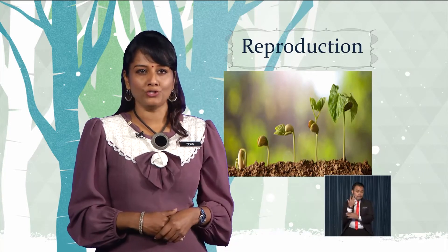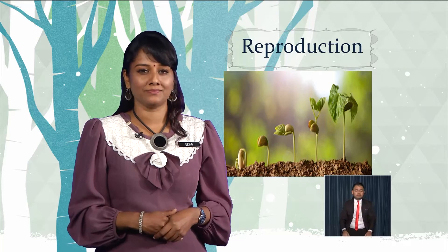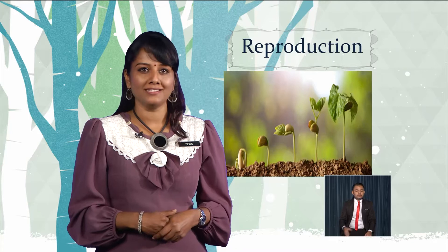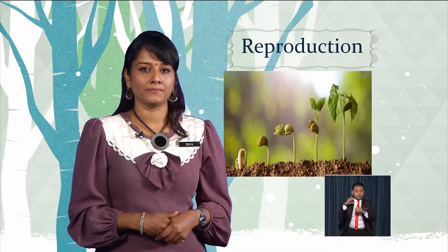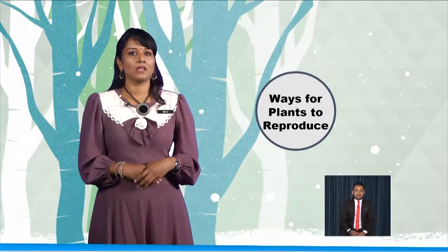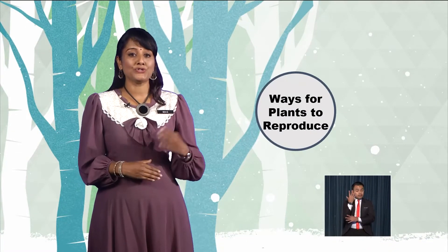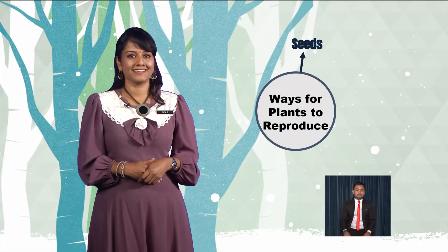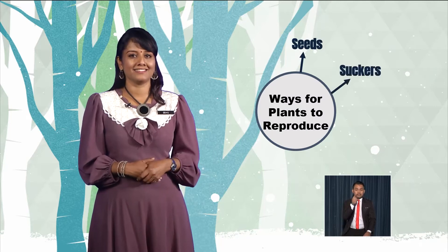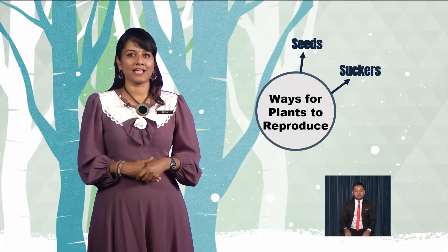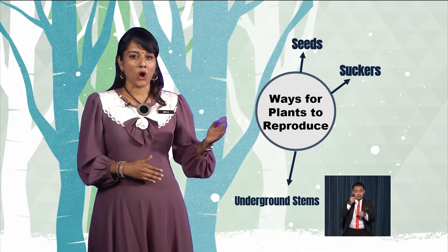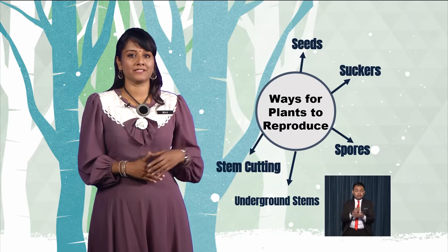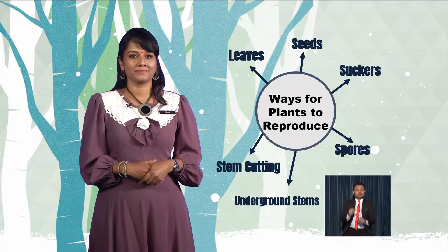Plants reproduce in various ways. These are some of the ways plants reproduce. They reproduce through seeds, suckers, underground stems, spores, stem cuttings, and leaves.